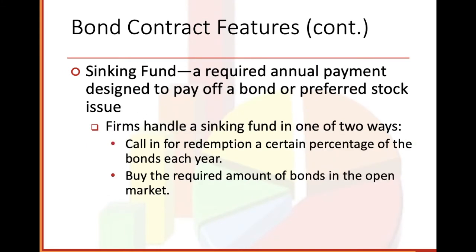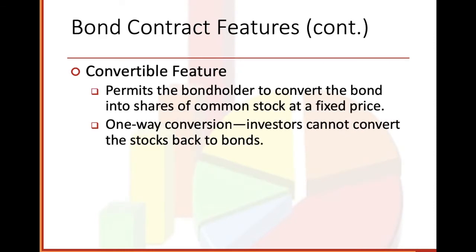Sinking fund: a required annual payment designed to pay off a bond or preferred stock issue. Firms handle a sinking fund in one of two ways — call in for redemption a certain percentage of the bond each year, or buy the required amount of bonds in the open market. Convertible feature: permits the bondholder to convert the bond into shares of common stock at a fixed price. There's one-way conversion — investors cannot convert the stock back to bonds. All of these are spelled out in the bond contract.